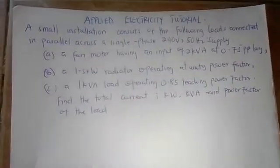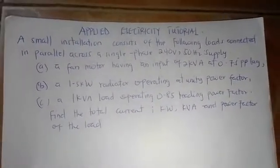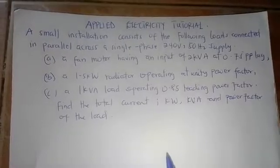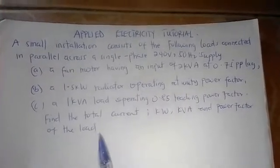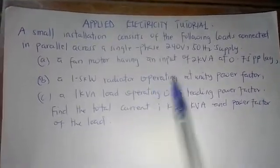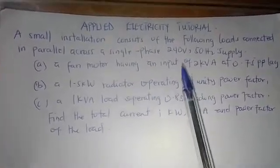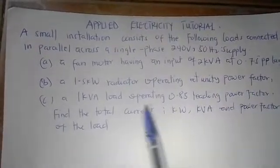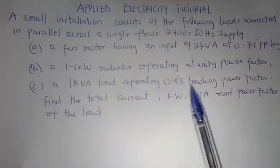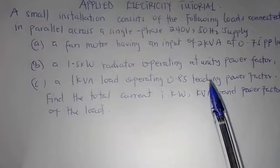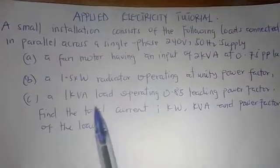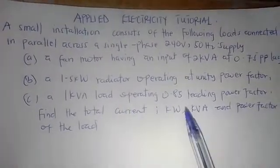Hello viewers, welcome back to another section of my tutorial. This is an applied electricity tutorial — a problem in AC theory. A small installation consists of the following loads connected in parallel across a single-phase 240 volt, 50 Hz supply. The loads are: a fan module having an input of 2 kilovolt-amperes at 0.75 power factor lagging, and a 1.5 kilowatt radiator operating at unity power factor.